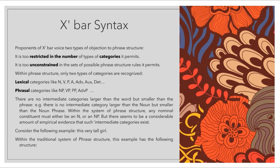There are no intermediate categories in phrase structure. There are no intermediate categories larger than the word but smaller than the phrase — meaning there is nothing that is bigger than N but smaller than NP, for example. The same goes for VP: there is nothing between V and VP. The same applies to PPs. Let's look at the PS rules.